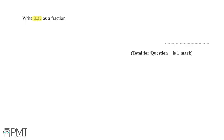We have been asked to write 0.37 as a fraction for one mark. The simplest way is to take the number after the decimal point, which is 37, and count the decimal places — there are two. So that means we write 37 over 100. You get one mark for this correct answer of 37 over 100.